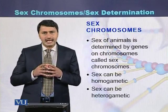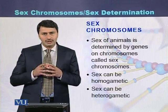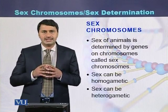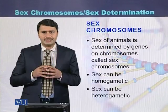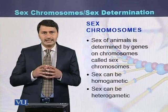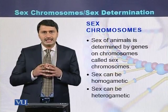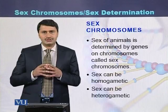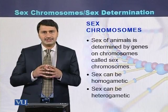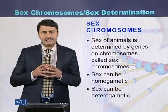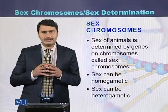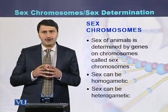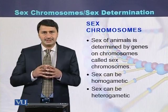Sex can be homogametic or heterogametic. In the case of homogametic sex, that sex produces only one type of gamete. While if the sex is heterogametic, then there are two types of gametes produced.